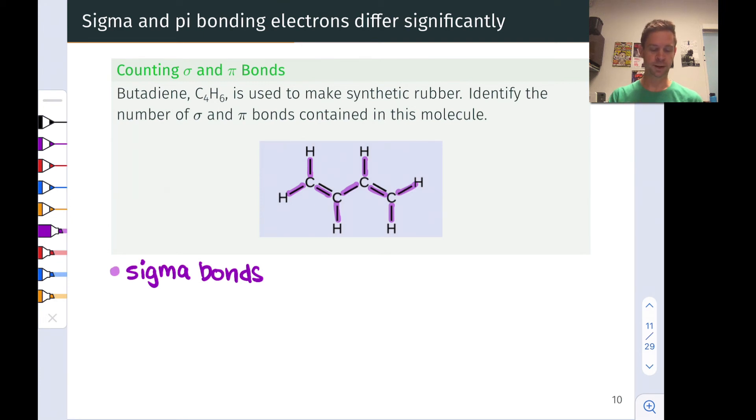So we've got one, two, three, four, five, six, seven, eight, nine sigma bonds in this molecule, counting the C, C, and C, H bonds.